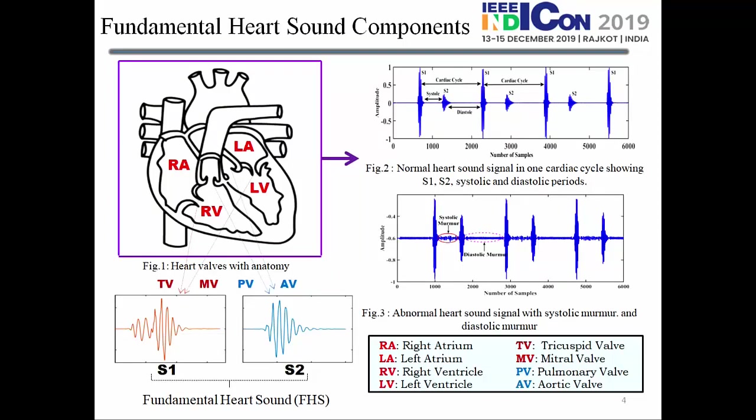S1 and S2 are both called the fundamental heart sounds. Apart from the fundamental heart sounds, there are two additional heart sounds — S3 and S4 — which sometimes occur in the PCG signal. Figure 2 represents the normal heart sound consisting of S1, S2, the systolic region, and the diastolic region. The total cardiac cycle consists of two regions: the systolic region and the diastolic region, which occur due to contraction and relaxation of the heart valve respectively. Figure 3 represents the abnormal heart sound, which consists of systolic and diastolic murmurs.